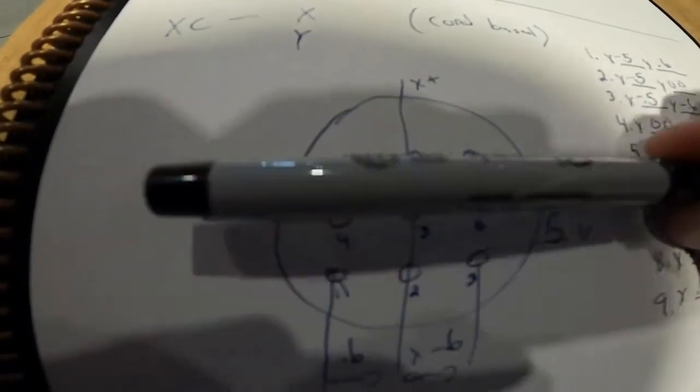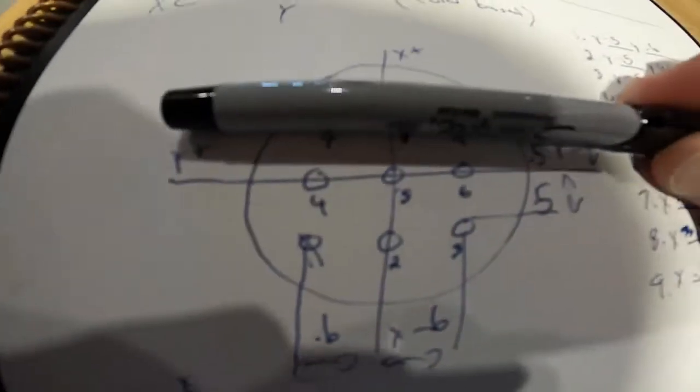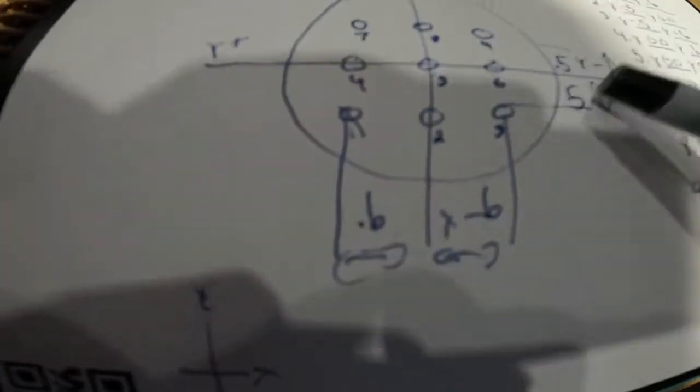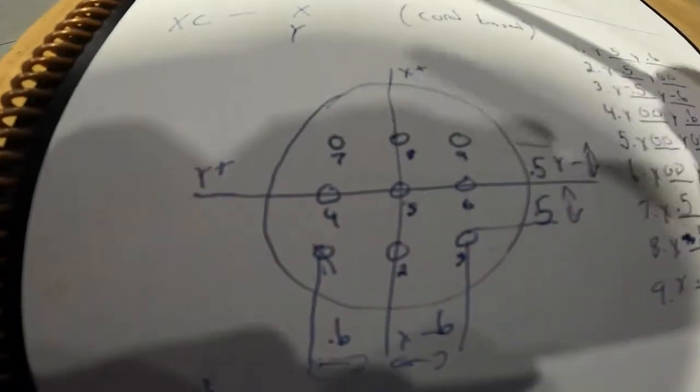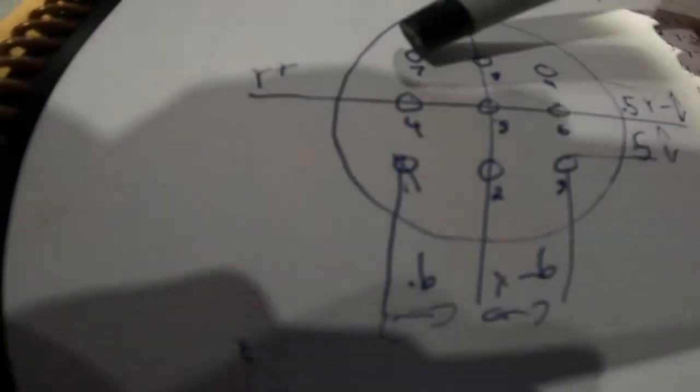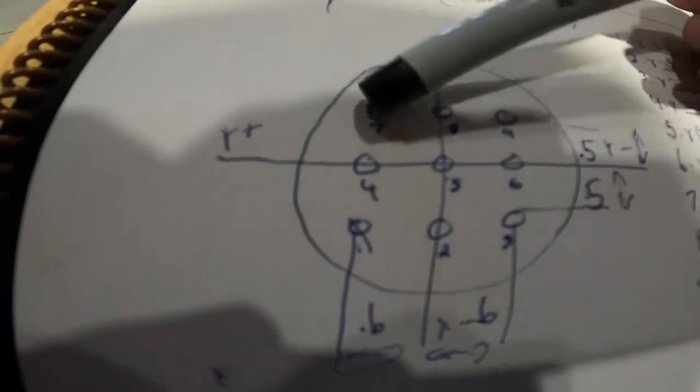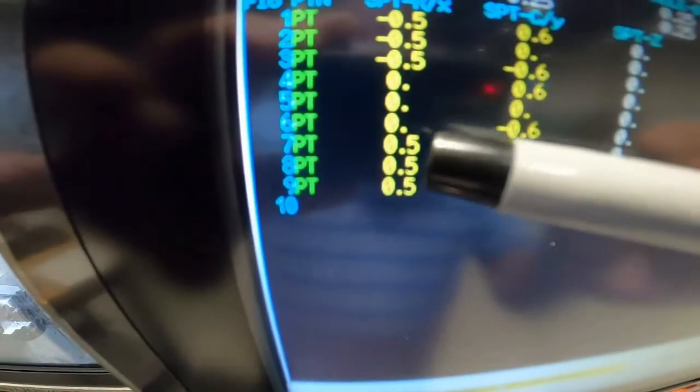And for the last three holes your X axis is going to be positive 0.5, positive 0.5, positive 0.5 — and your Y's are again positive 0.6, zero, negative 0.6. There you have it. Shape end, end.